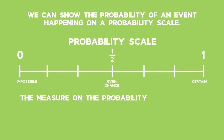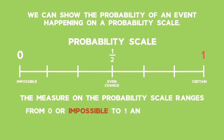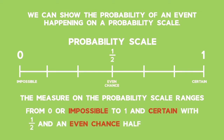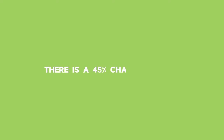The measure on the probability scale ranges from 0, or impossible, to 1 and certain, with one half and an even chance halfway between. We can also measure a probability with a percentage. For example, there is a 45% chance of rain. This example illustrates some of the important definitions used in probability.